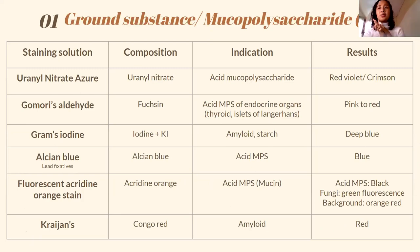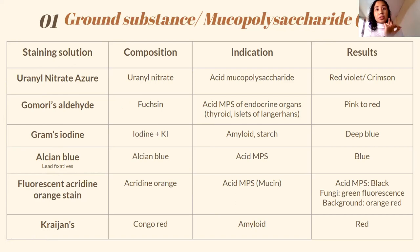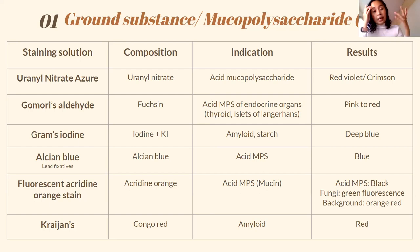Now for mucopolysaccharides — recall from our fixatives discussion that lead fixatives are appropriate for these. Examples of mucopolysaccharides include heparin, mucin, and amyloids. Importantly, abnormal formation of amyloid is associated with slow deterioration of memory — dementia and Alzheimer's disease. Increased amyloid formation is a sign of pathology.